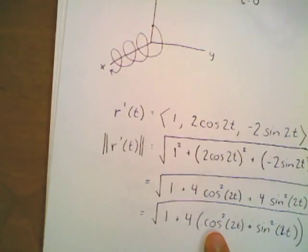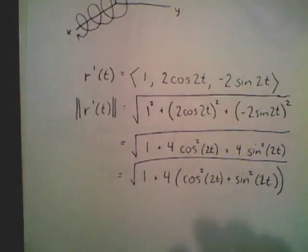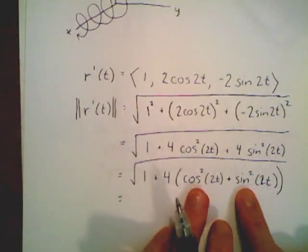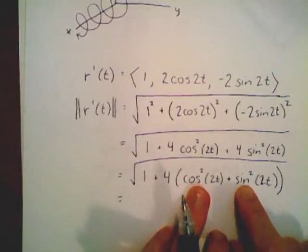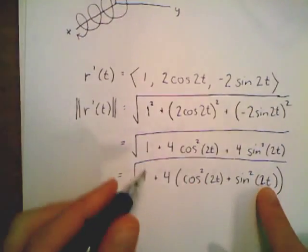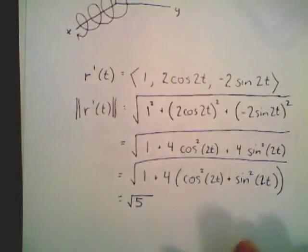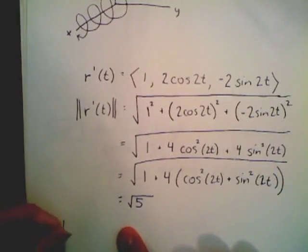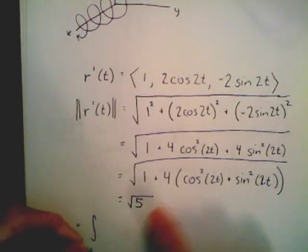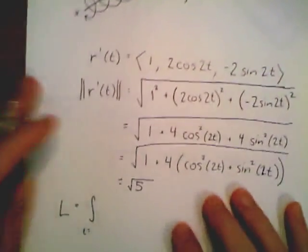Simplifying: 1 squared is 1, plus 4 cosine squared of 2t, plus 4 sine squared of 2t. I can factor out the 4, giving 1 plus 4 times (cosine squared of 2t plus sine squared of 2t). Since cosine squared plus sine squared equals 1 — that's the only trig identity I have instantly memorized — this simplifies to 1 plus 4, giving a magnitude of square root of 5.